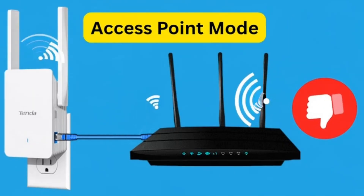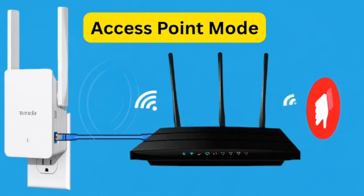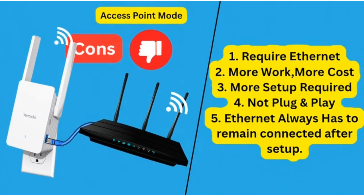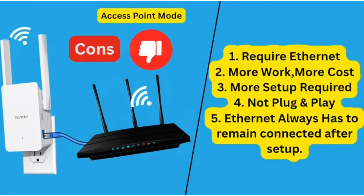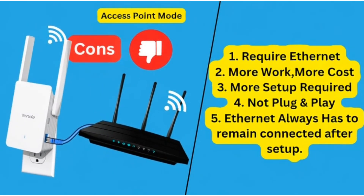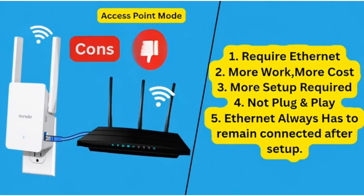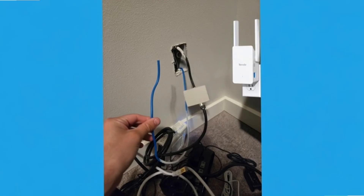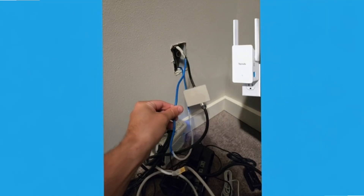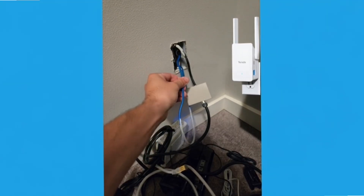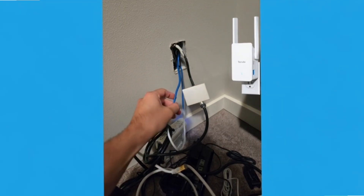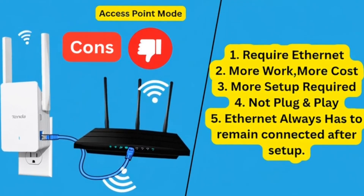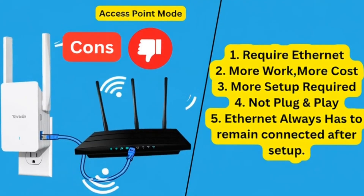Now some cons of access point mode: it requires an Ethernet cable, which means more work and more cost. Also, slightly more setup is required — like running cable throughout your house — compared to just plugging in an extender in repeater mode.